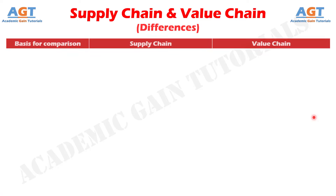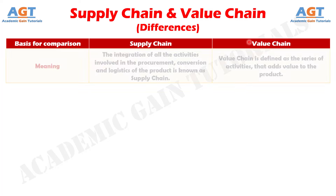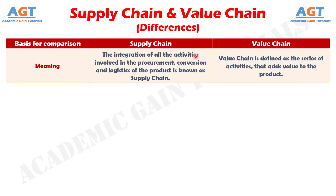Let's look into the basic differences between supply chain and value chain in a tabular form. Difference number 1: the integration of all the activities, persons and business through which a product is transferred from one place to another is known as supply chain. Whereas, value chain refers to a chain of activities that is indulged in adding value to the product in every single step till it reaches the final consumer.